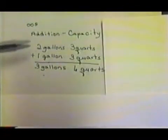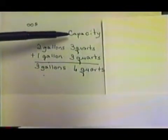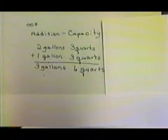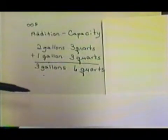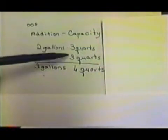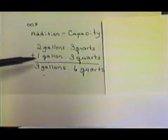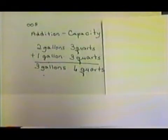Now, let's work with an addition problem that involves capacity, our liquid measurement. We have 2 gallons, 3 quarts, and we want to add that to 1 gallon, 3 quarts. So, if we add our quarts together, we end up with 6 quarts. We add our gallons together, we end up with 3 gallons. So, we have 3 gallons and 6 quarts.